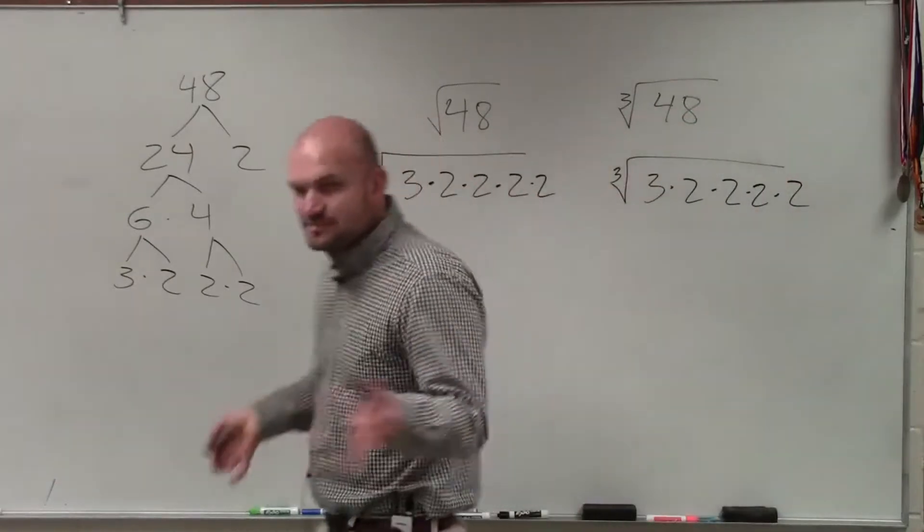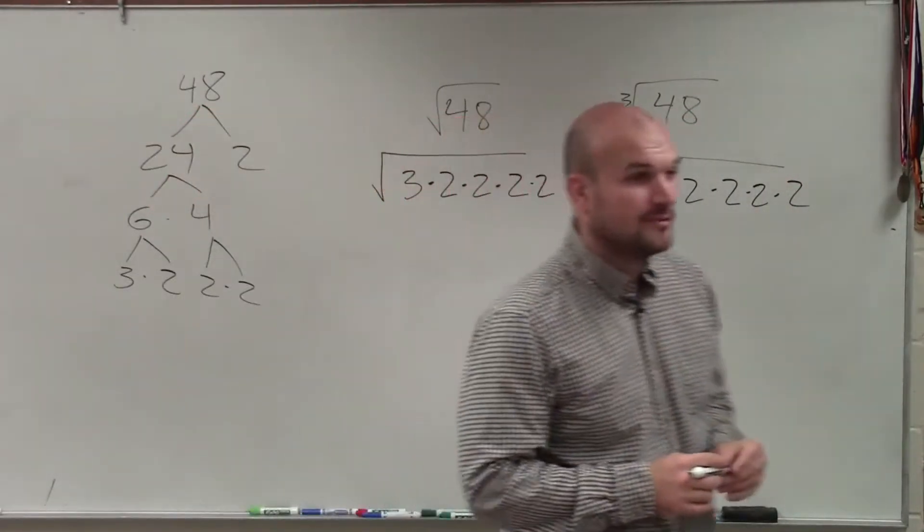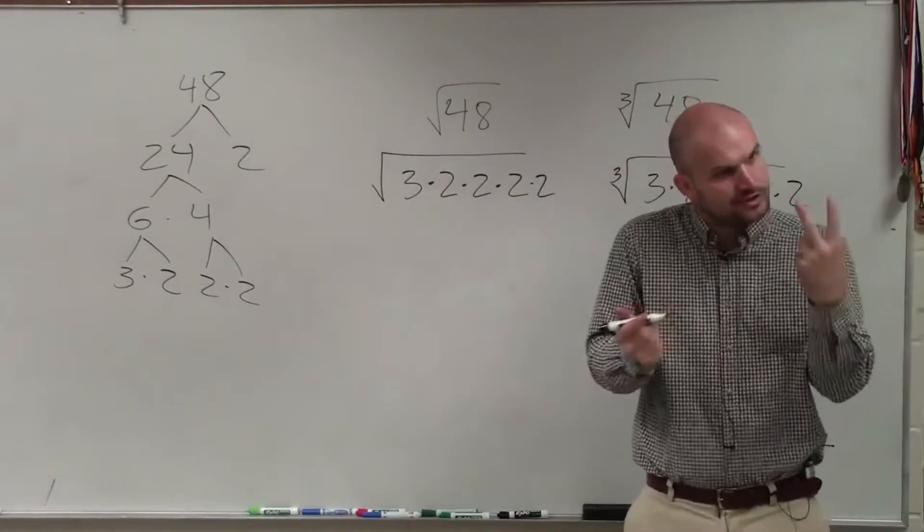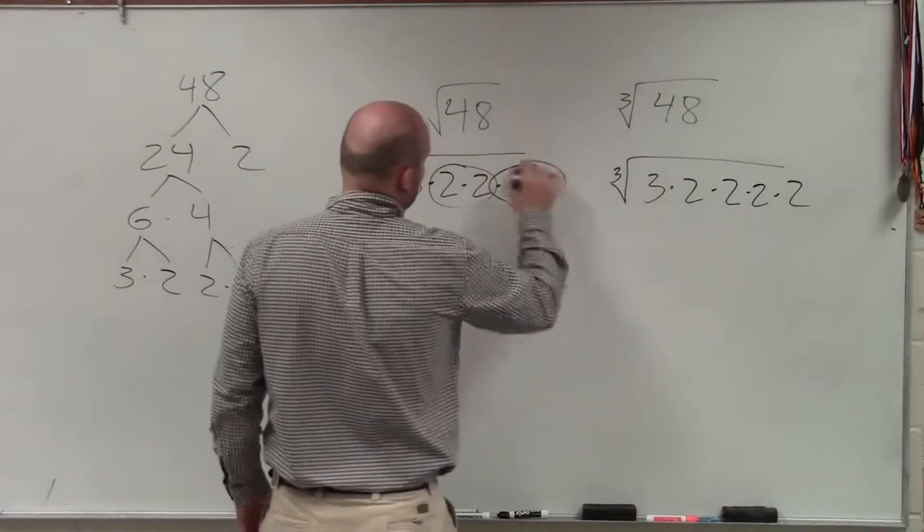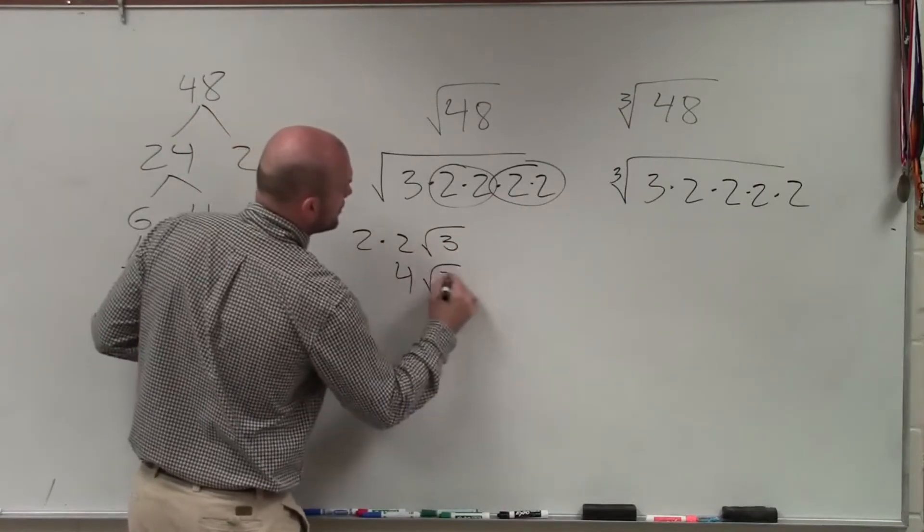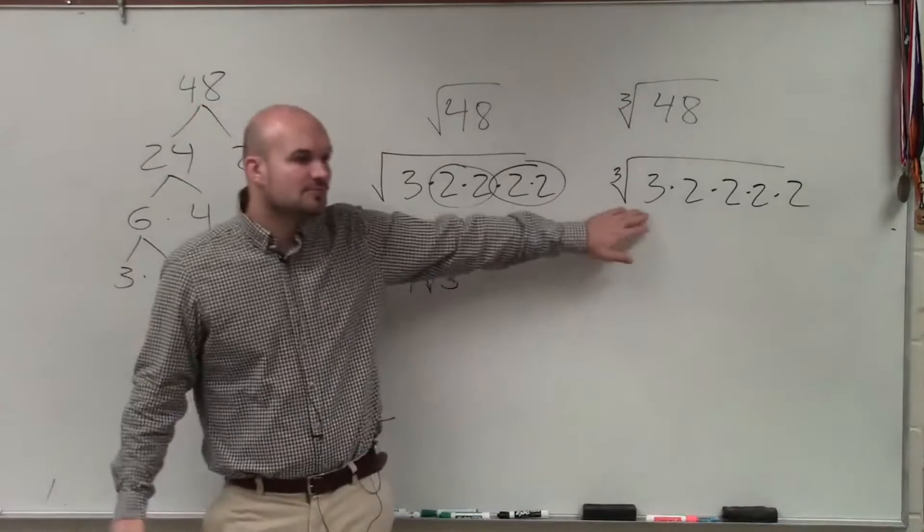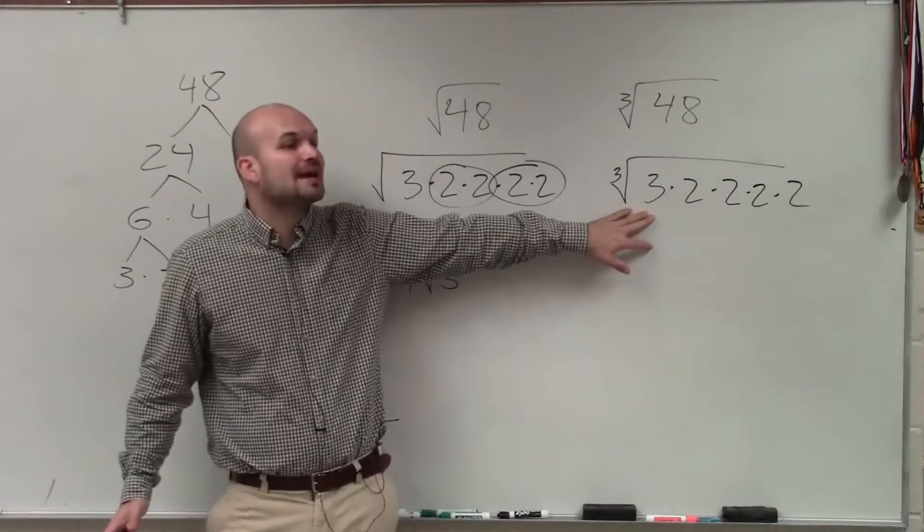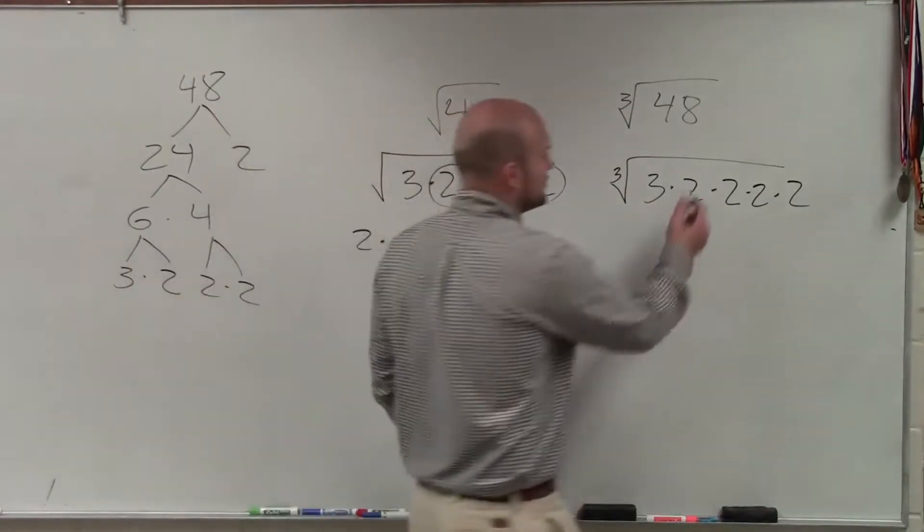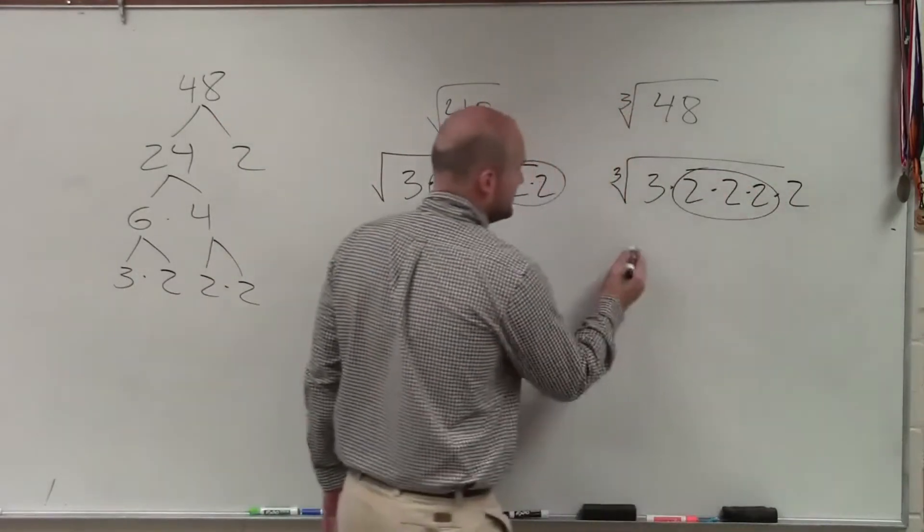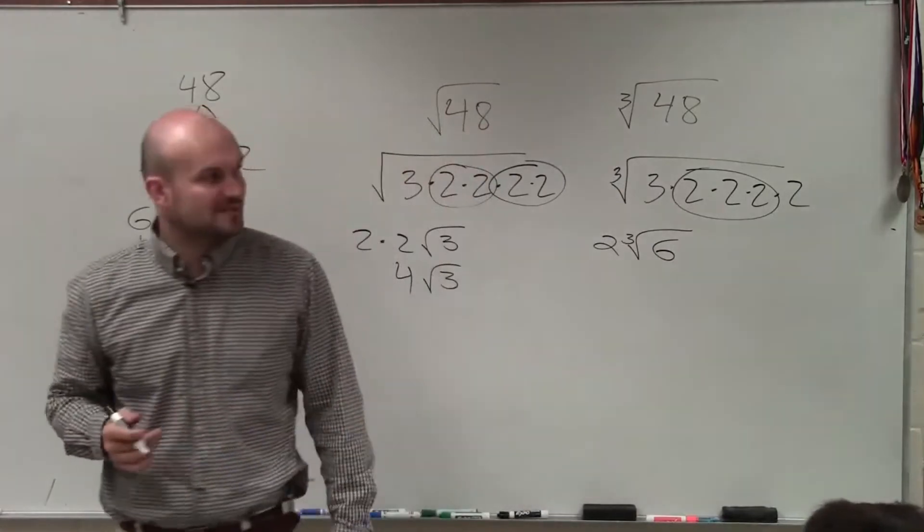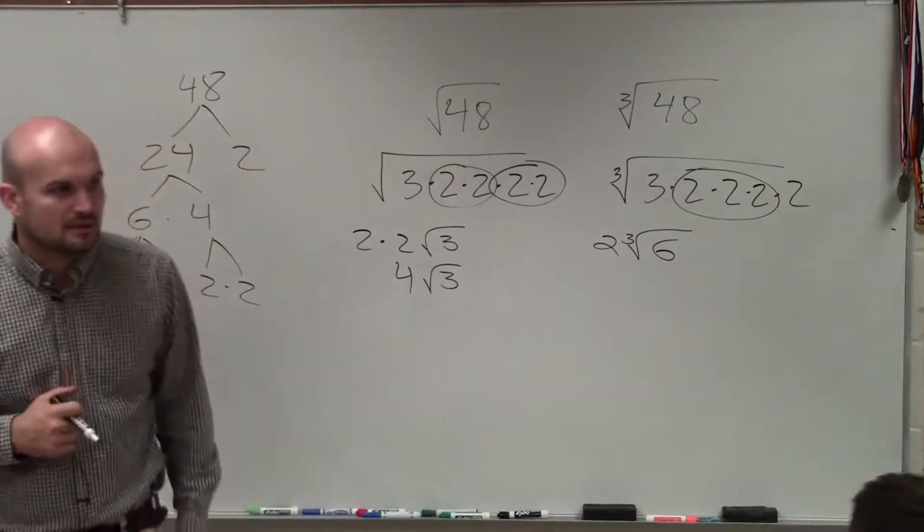Now, the difference between the square root and the cube root. For the square root, we always want to pull out pairs, because it's squared, so there's two of them. So I could pull out one pair and two pairs. So I'd have 2 times 2 times square root of 3, which is 4 square root of 3. However, for the cube root, if for the square root I'd take out pairs of 2's, for the cube root I'd want to take out groups of 3. So therefore, that's going to be 2 times the cube root of 3 times 2, which is left over, which would be 6. Does that make sense?